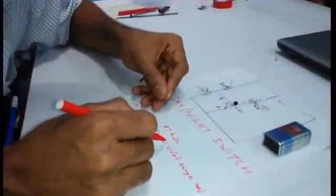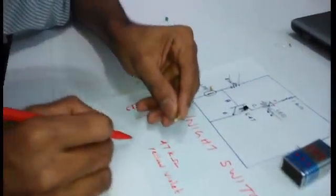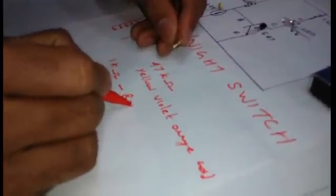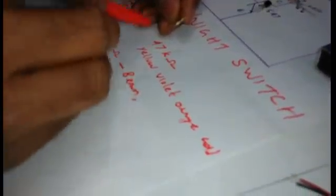This is the 1 kiloohm resistor. The color code for the 1K resistor is: brown, black, black, red, and gold.